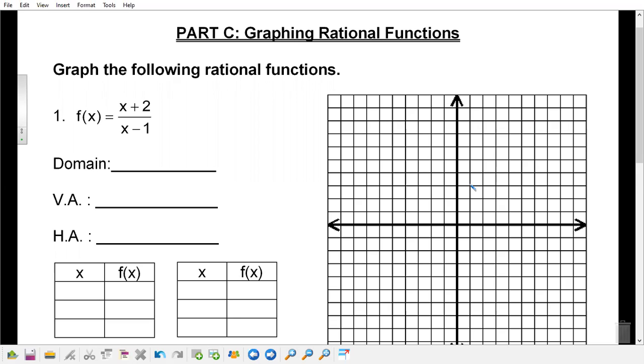Then we just choose points and plug them in. So for our asymptotes, our vertical asymptote, where is it? X equals one. Horizontal asymptote, where is it? Y equals one, because it's the same degree and the leading coefficients are one.